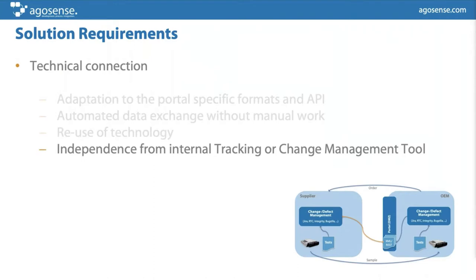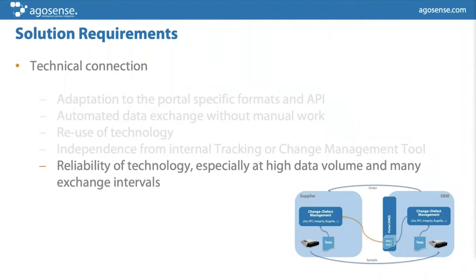Sometimes within one company there are different tracking or change management systems, so the solution should work with all of them. Last but not least, it is very important that the system running in the background is truly reliable, especially with high data volumes and many exchange intervals. Some kind of load balancing or failover security should already be implemented into such a back-end system.